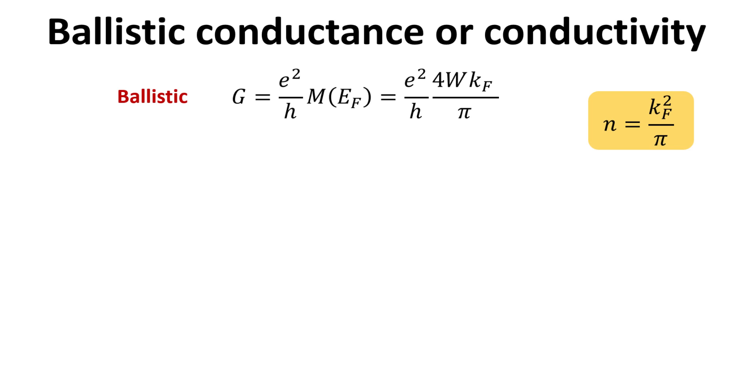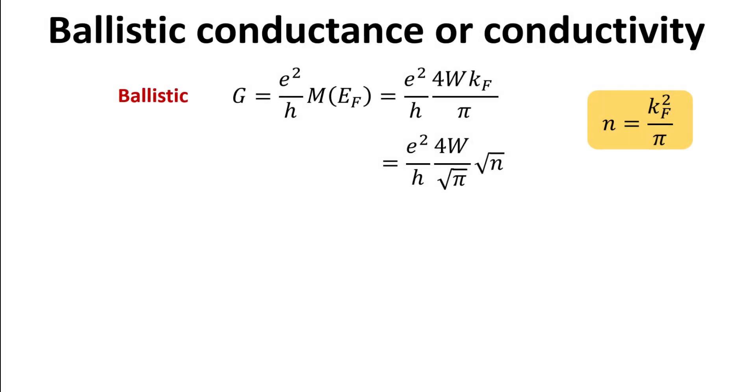Recalling that the electron density in graphene is given by the fermi wave vector square divided by pi, a result we derived in previous videos. We can then obtain a final expression for the ballistic conductance, which is proportional to the square root of n.